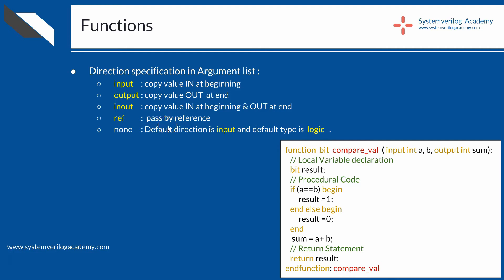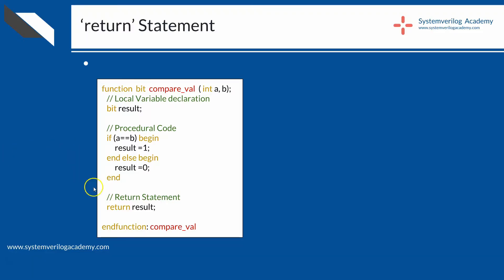Usually, you will use direction specification only for tasks and not for functions. Regarding the return statement in functions and tasks: the return statement was added in SystemVerilog and is not available in Verilog. You can add it anywhere in a function or task. When the return statement is evaluated, execution of the function or task will stop at that point and return to the point where the function or task was called.